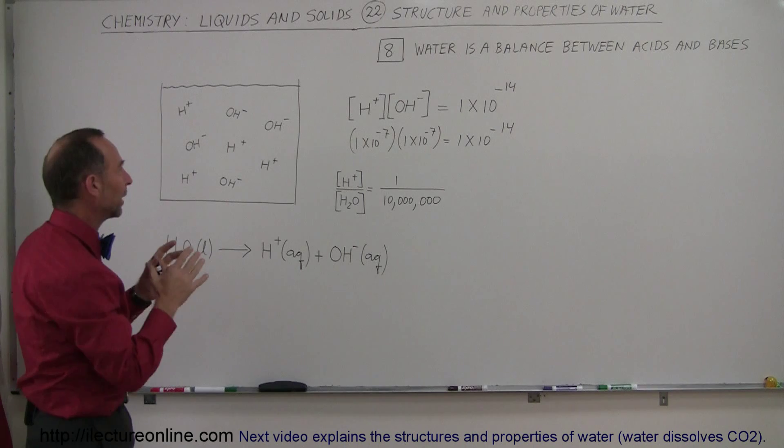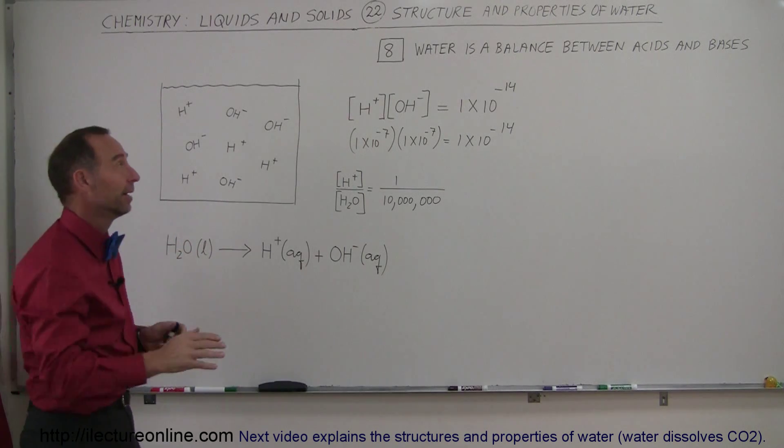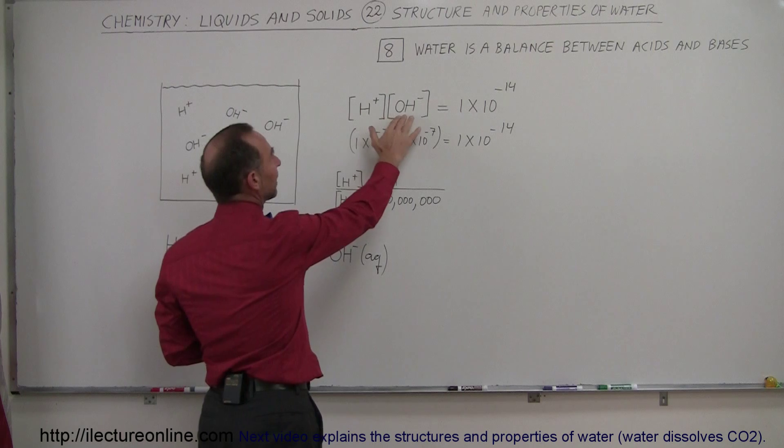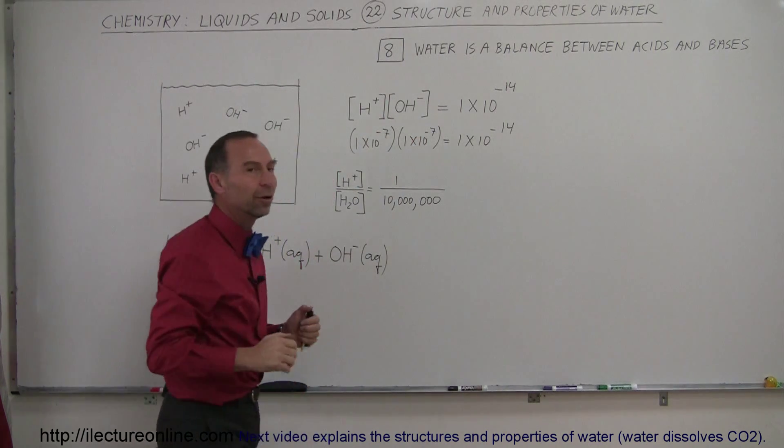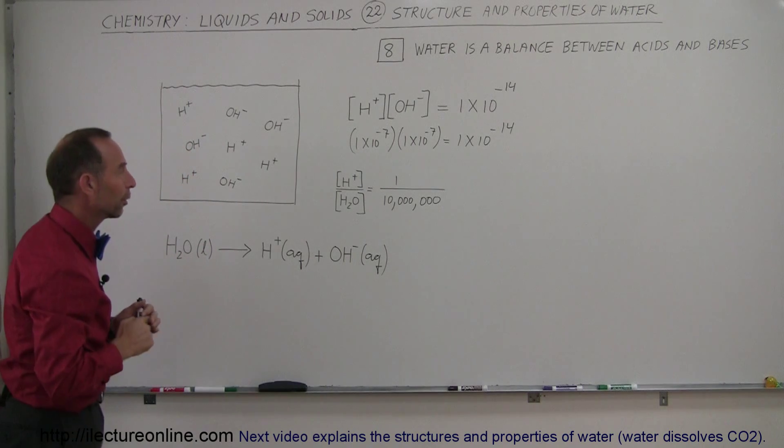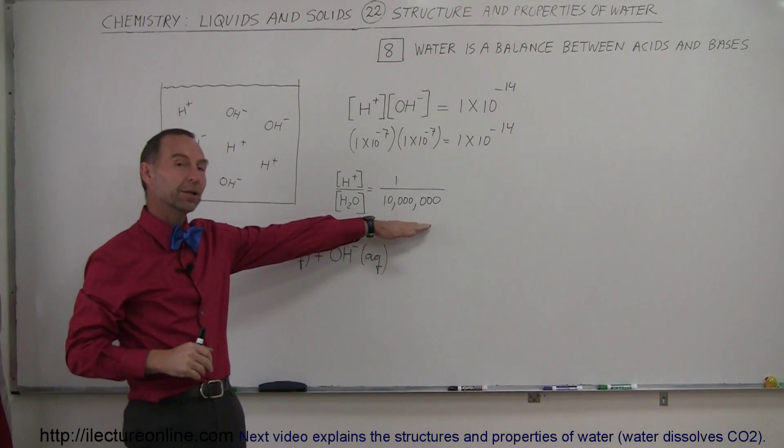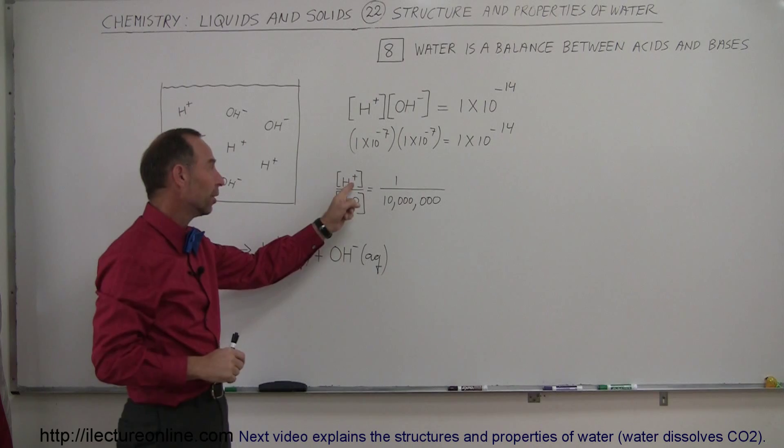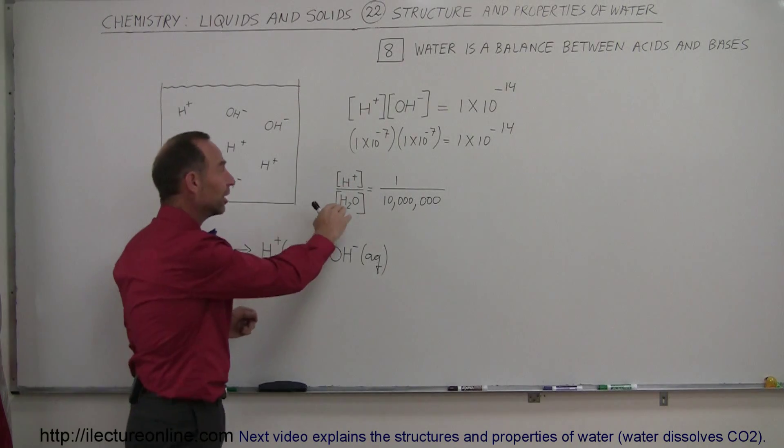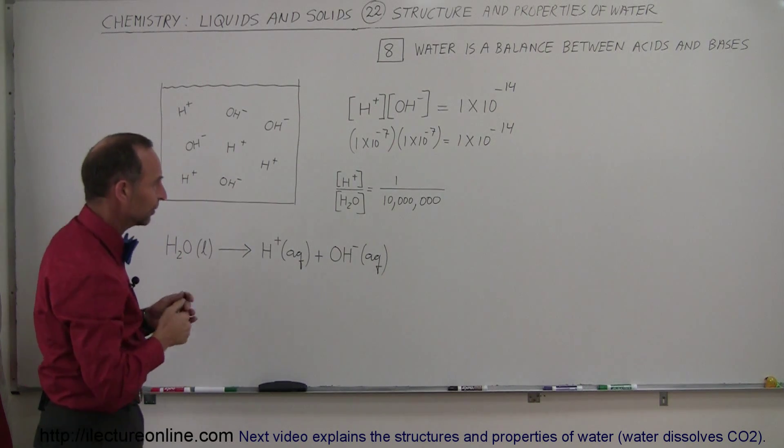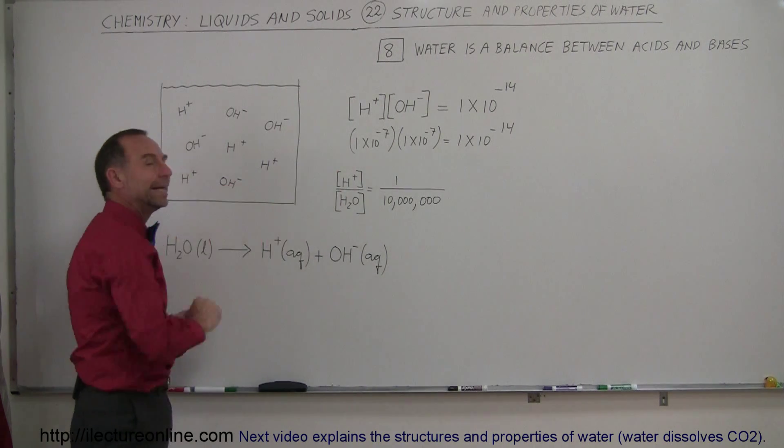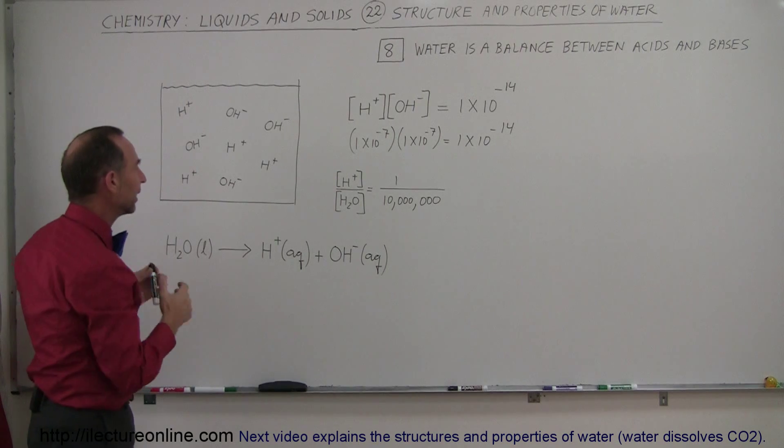How much of the water will actually do that? Well it's not a lot. The concentrations of the hydrogen ion and the hydroxide ion is actually 1 times 10 to the minus 7 per unit of water. In other words, out of 10 million water molecules, only 1 out of 10 million will dissociate into hydrogen and hydroxide ion, so that the concentration of the hydrogen ion is 1 in 10 million, typically in a cup.